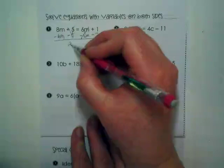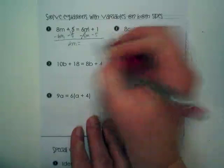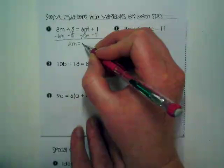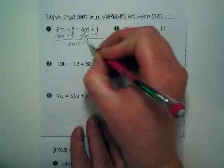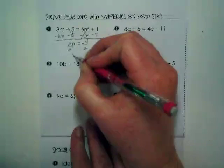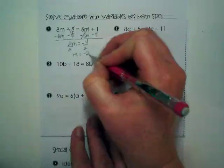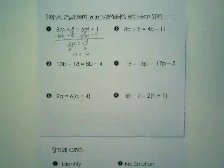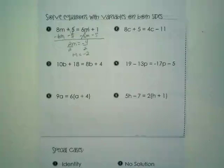8m minus 6m is going to give us 2m equals what kind of 4? A negative 4. And then we're going to divide both sides by 2. m is going to be equal to negative 2. If we had more room here, I would have us check it, but we don't. So we're just going to move on and do a different example.